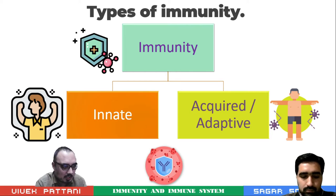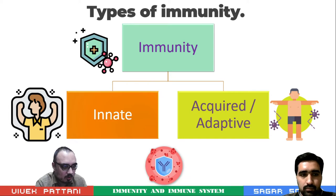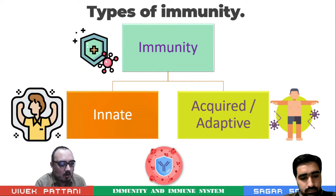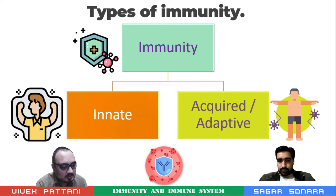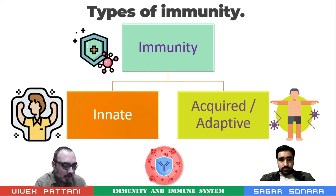There are basically two types of immunity: innate and acquired. Innate immunity is also known as non-specific, and adaptive or acquired immunity is also known as specific immunity. This can be further divided into cellular and humoral responses. Both could be either natural or artificial.